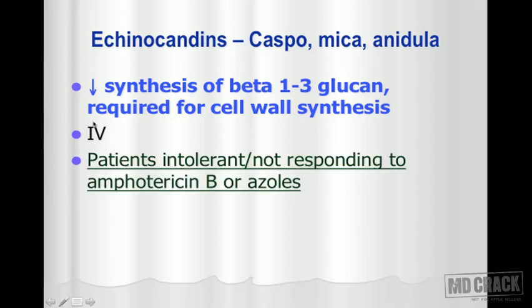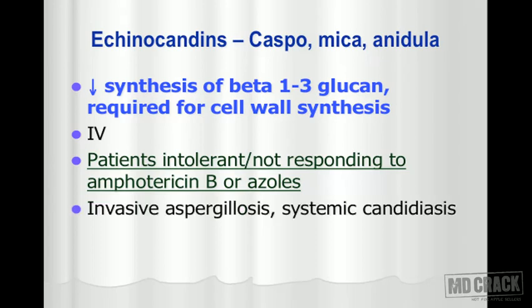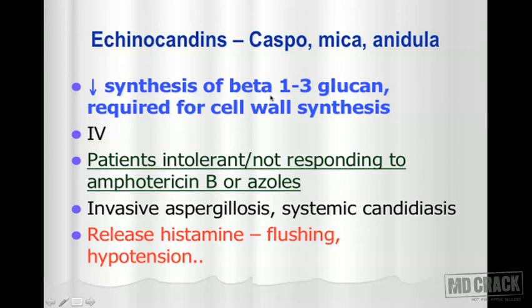Echinocandins must be administered by the intravenous route and are currently reserved for patients who cannot tolerate amphotericin B or azoles, or who do not respond to these primary treatments. Their indications are invasive aspergillosis and systemic candidiasis. The notable adverse effect is histamine release, causing flushing of the face and hypotension.